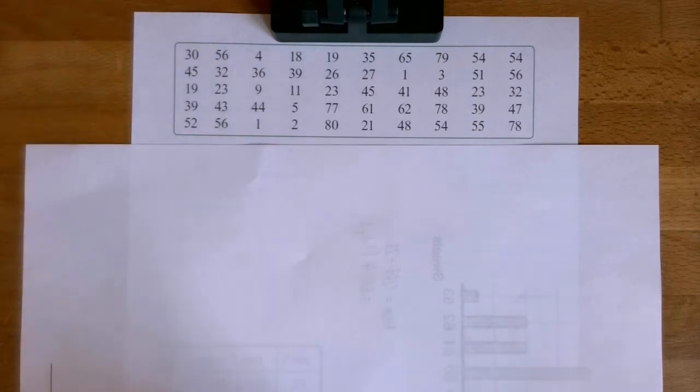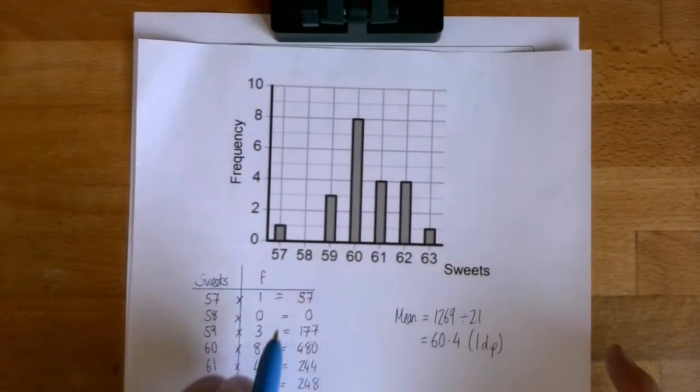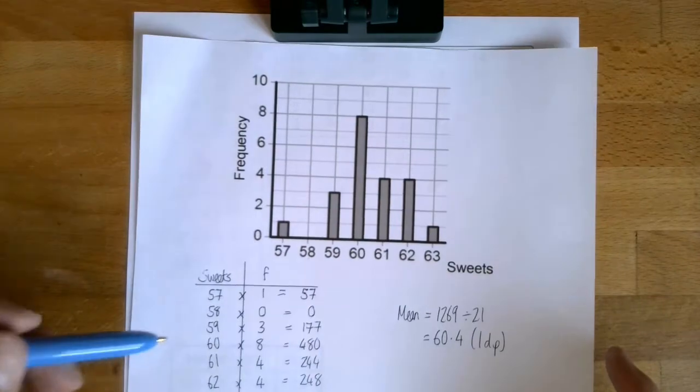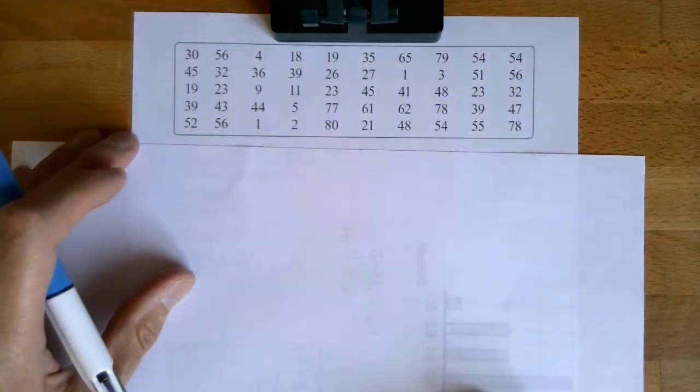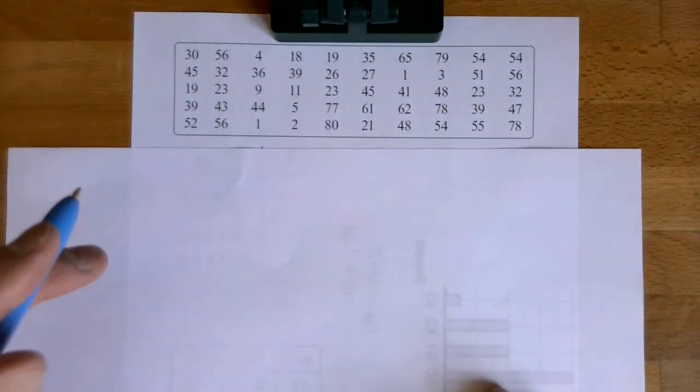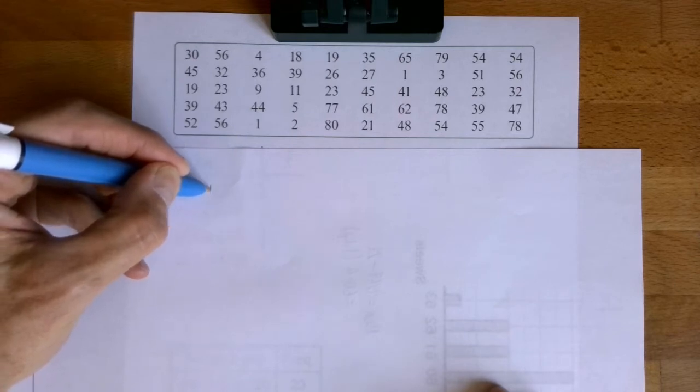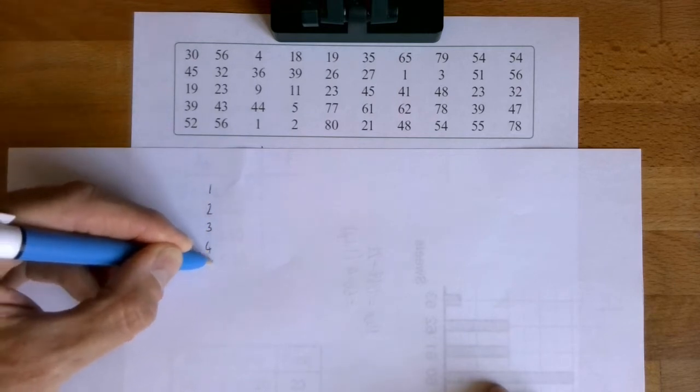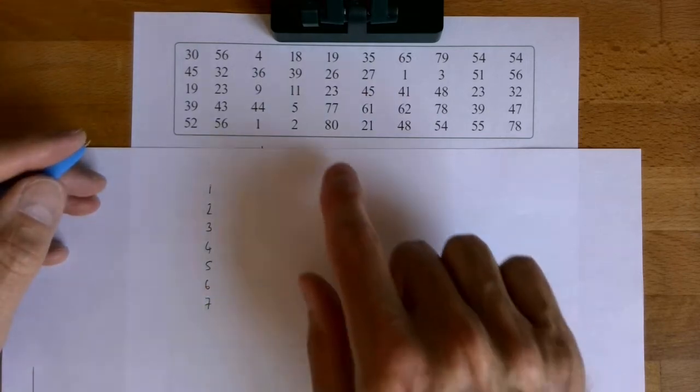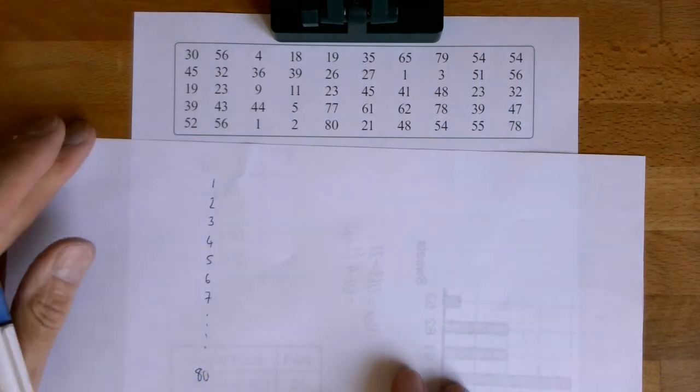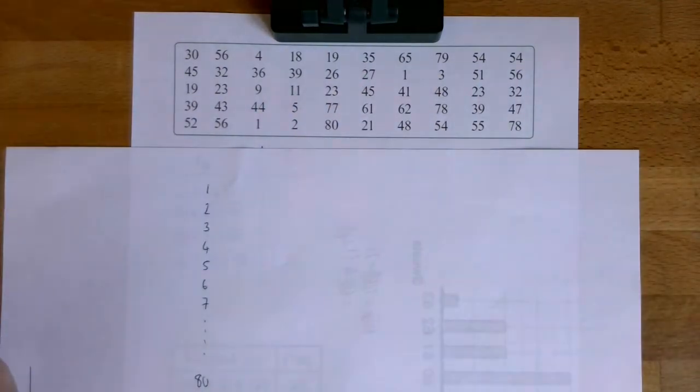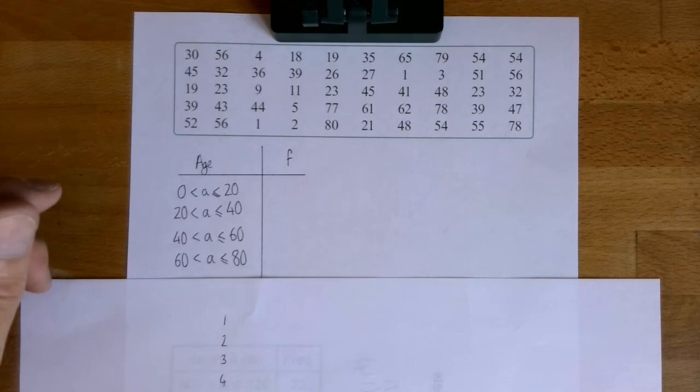When we did the survey of the number of sweets, we only had seven different numbers to go in our tally chart. But how many different ages have we got here? We've got loads. So I could do a tally chart that has how many people are one year old, two years old, three years old, four years old, but that tally chart would have to go all the way to 80, which is the oldest person. That would be a very long tally chart and it would be just as complicated as adding the data up in the first place. So here's what I'm going to do. I'm going to tally this data up into groups. These are sometimes called classes. I use the word groups.